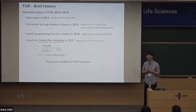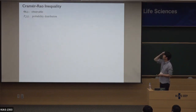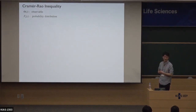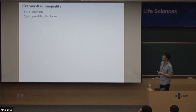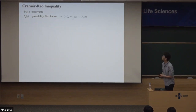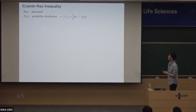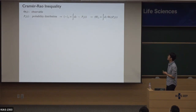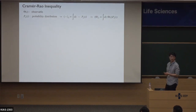What is the Cramér-Rao inequality? Let's say there is some general observable theta, which is a function of Z, and there is some probability distribution P which is also a function of Z, parameterized by some parameter epsilon — so P also depends on epsilon. The bracket with subscript epsilon means the average over this distribution. So this notation means the observable average computed using this probability distribution.